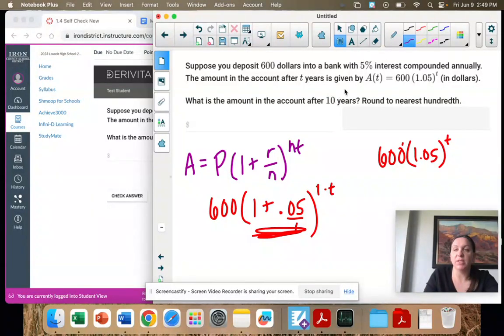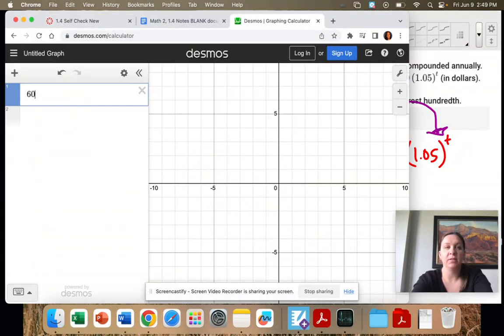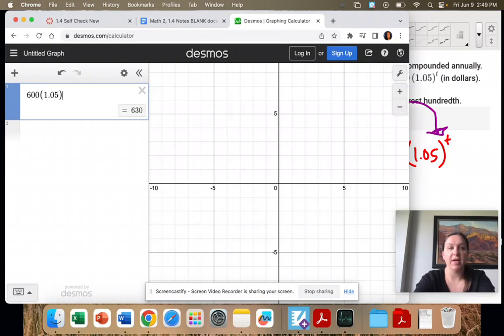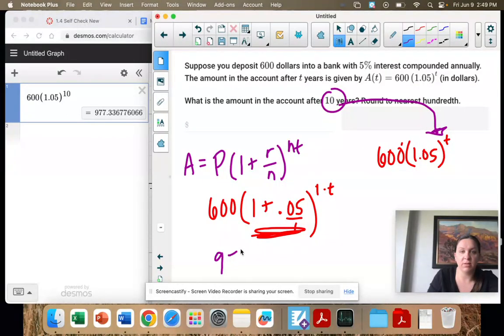All you have to do is put in 10 for T. Awesome. So 600 times 1.05, shift 6 to get my exponent, 10. That gives us 977.336.